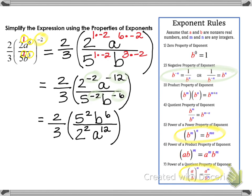I do not have any more negative exponents, so now I can simplify a little bit further. Two-thirds remains two-thirds. In the numerator, 5 squared becomes 25, and then I have b to the sixth. In the denominator, I have 2 squared, but I'm going to write it as 2 factors of 2 rather than 4, because it's going to help me simplify with the two-thirds fraction being multiplied on the outside of the parentheses.